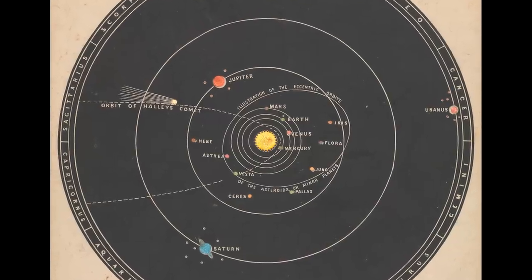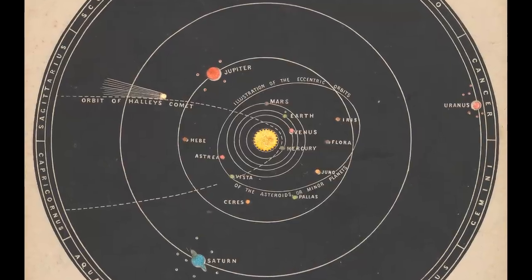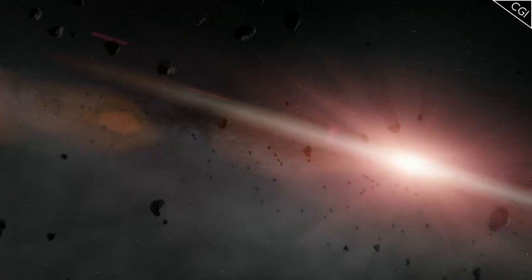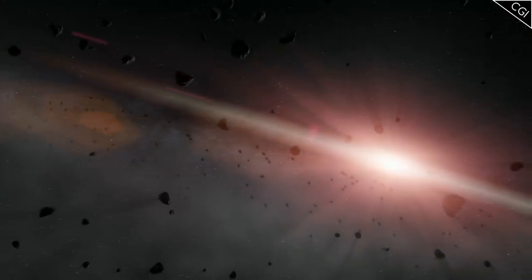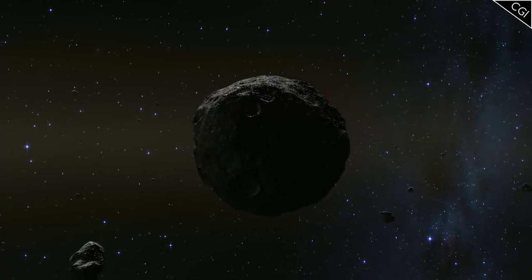At that time, there wasn't a clear distinction between the 8 planets we know today, and the large asteroids that were being discovered. By the 1860s, over 100 asteroids had been found, and they were finally given their own distinct classification as asteroids.